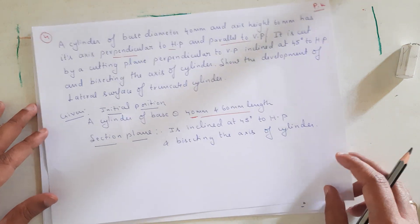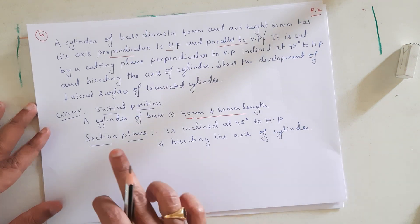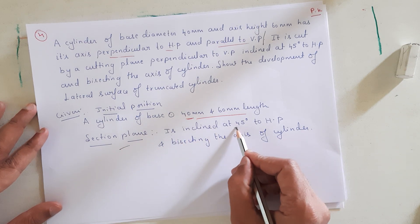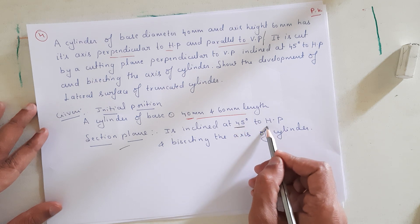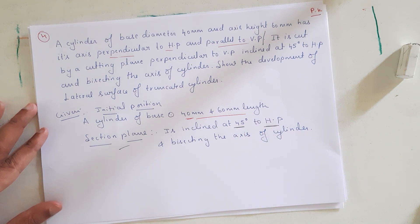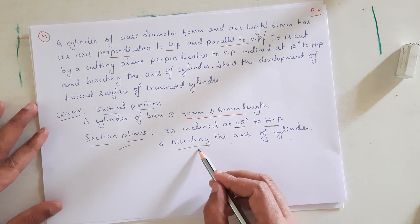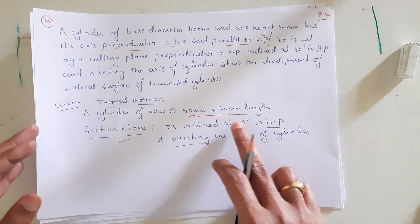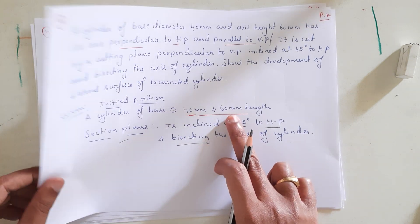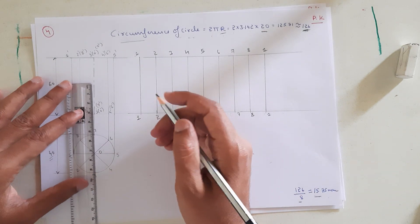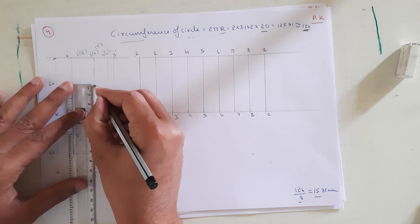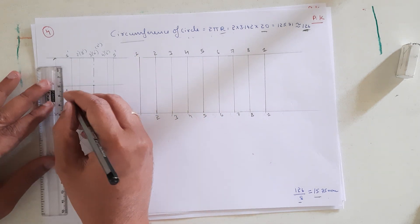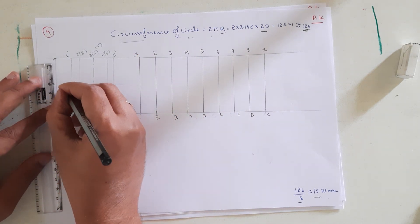Now there is another condition given in the problem: the section plane is at 45 degrees to HP and bisecting the axis. Bisecting means dividing the axis into 2 equal parts. The axis length is 60 mm, so half is 30 mm. I will measure 30 mm from the base and mark this point, then draw a horizontal line at 30 mm.